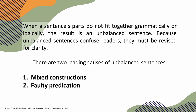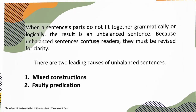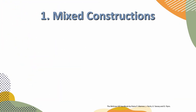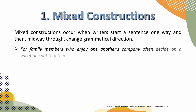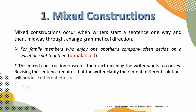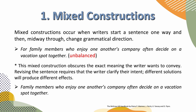There are two leading causes of unbalanced sentences. The first one is mixed constructions. The second one is faulty predication. Let's take a look at the first one — mixed constructions. Mixed constructions occur when writers start a sentence one way and then, midway through, change grammatical direction.